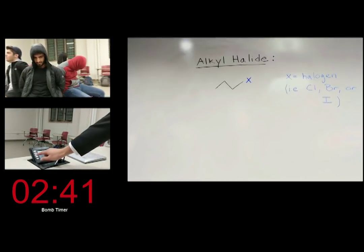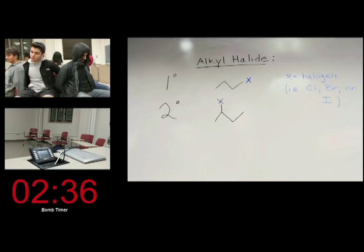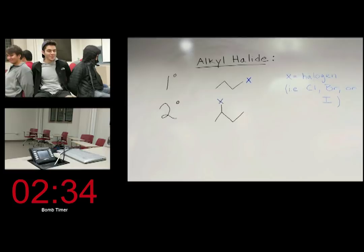There are also different kinds of alkyl halides. Primary, which is on a carbon that is attached to only one other carbon. Secondary, which is on a carbon that is attached to two other carbons.